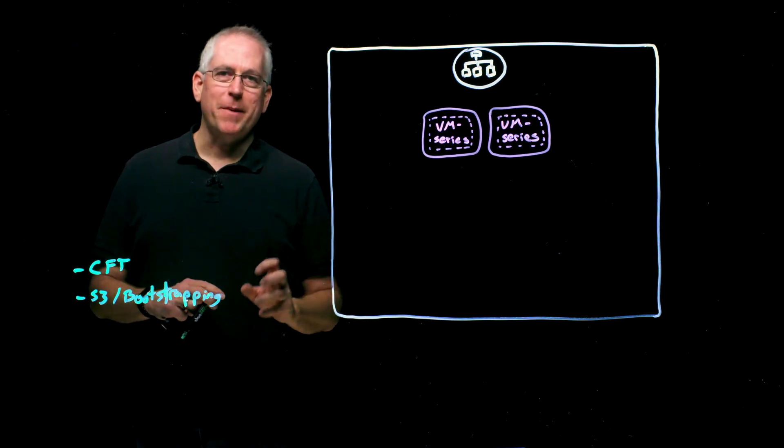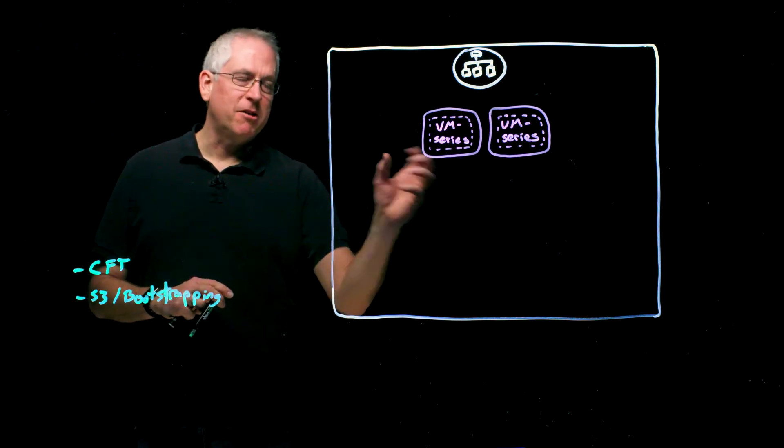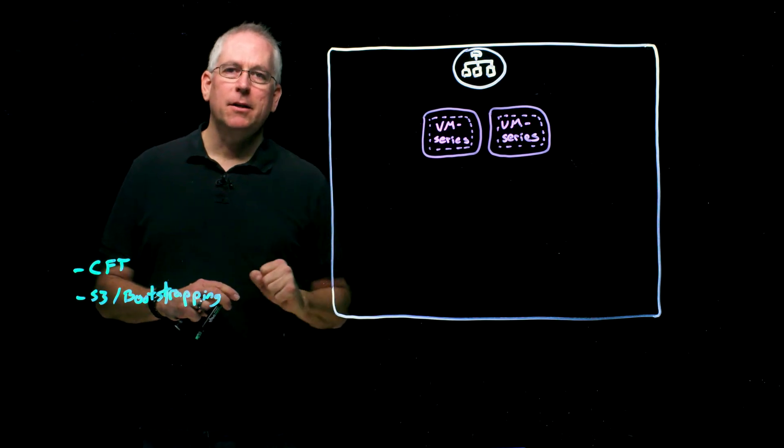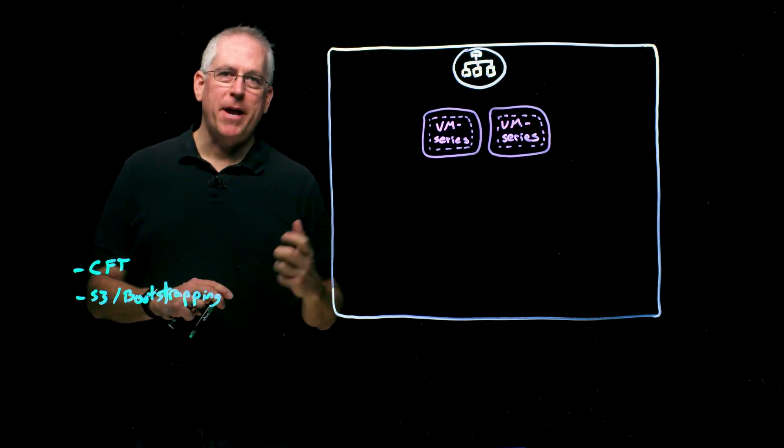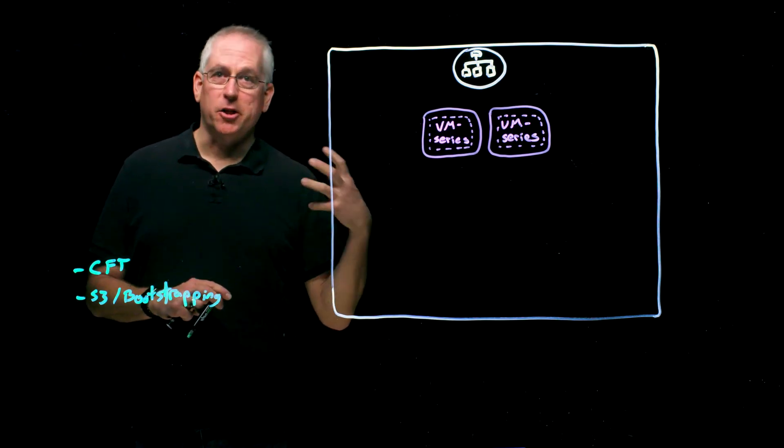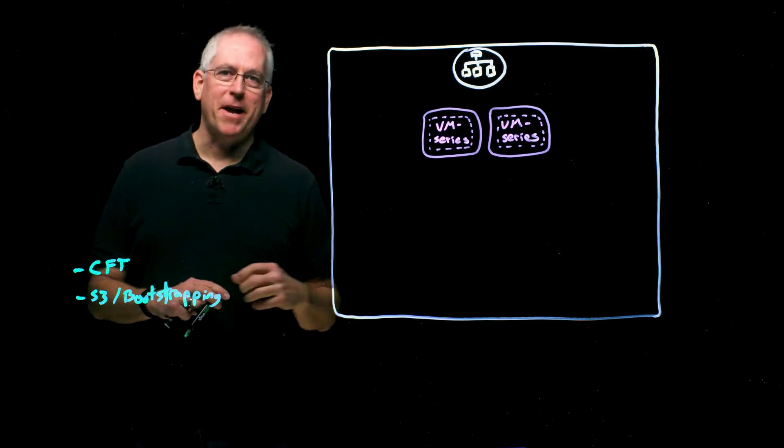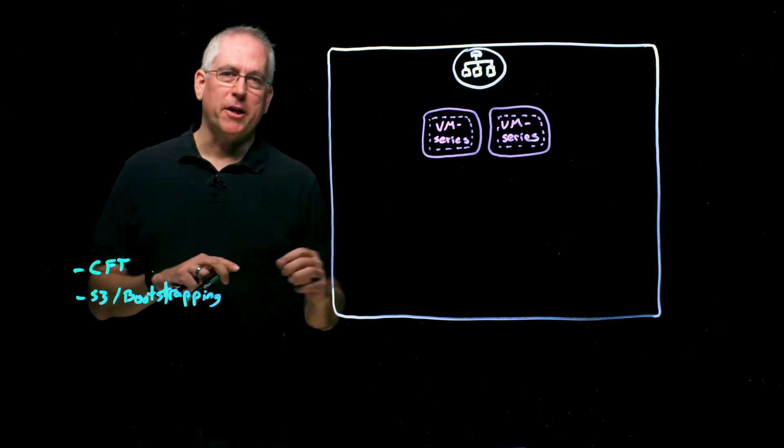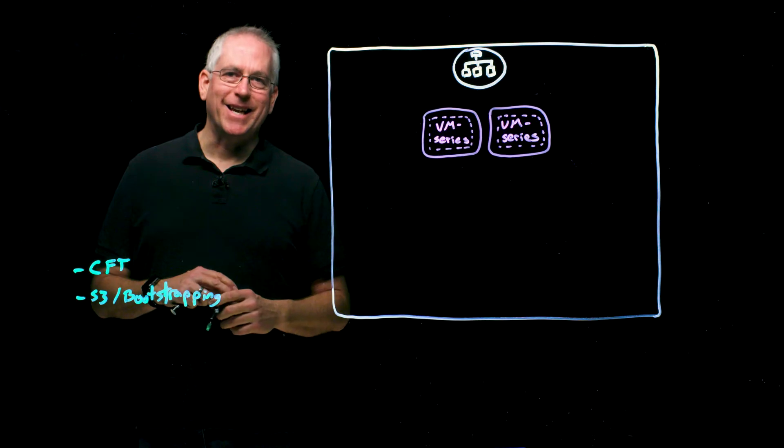Optionally, we can include information on how to connect that VM series firewall to Panorama, so that we can forward logs to Panorama and consume the latest security policy, for example, directly from Panorama. This will be very important later when I talk about how this solution scales.